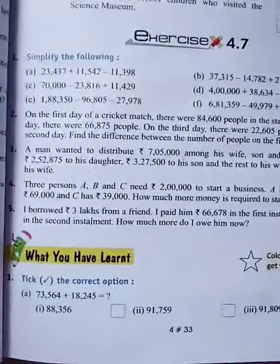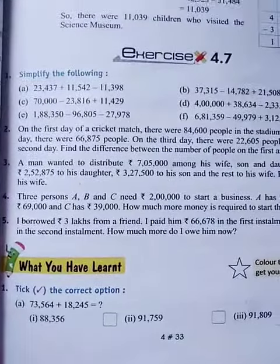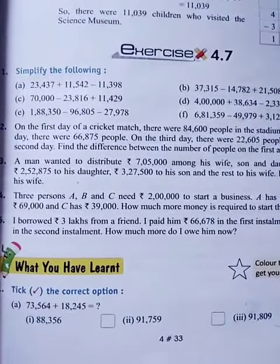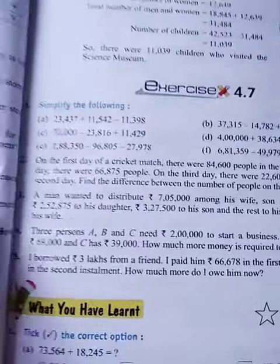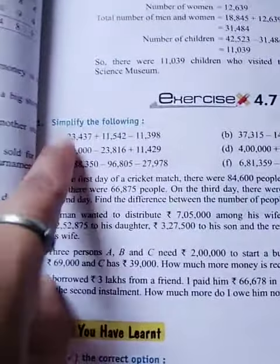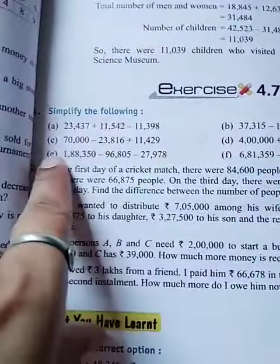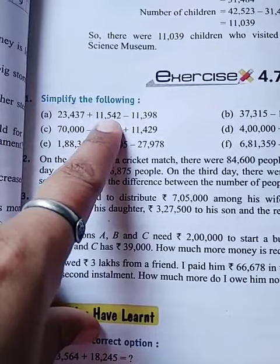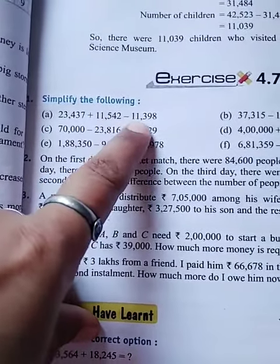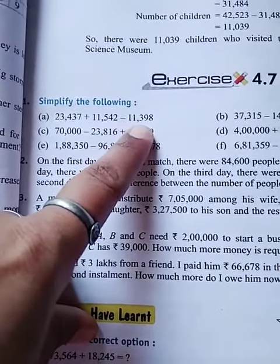And in this exercise, dear students, we have to simplify the following. In this question, first of all we add, then we subtract. Our first question is 23,437 plus 11,542 minus 11,398.